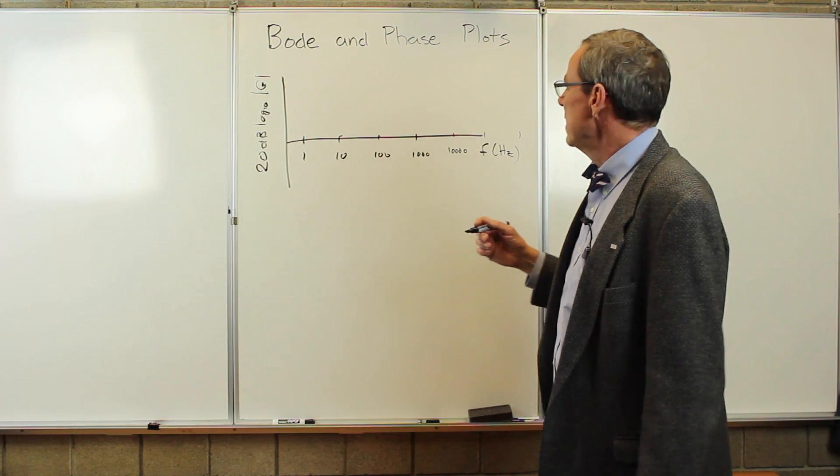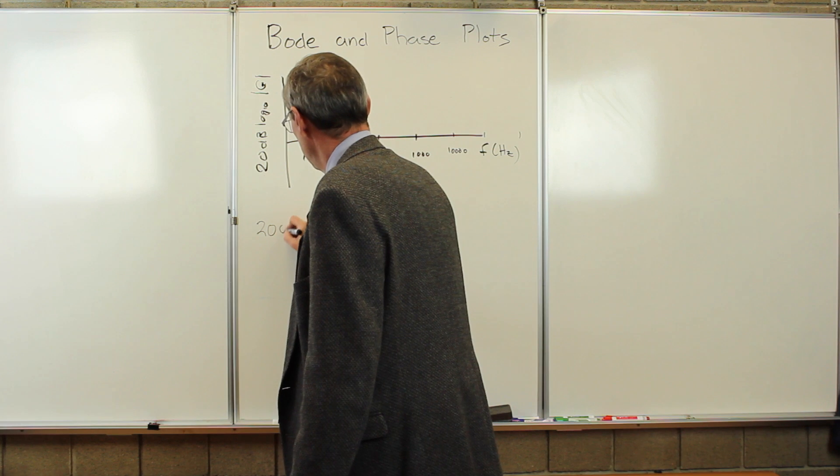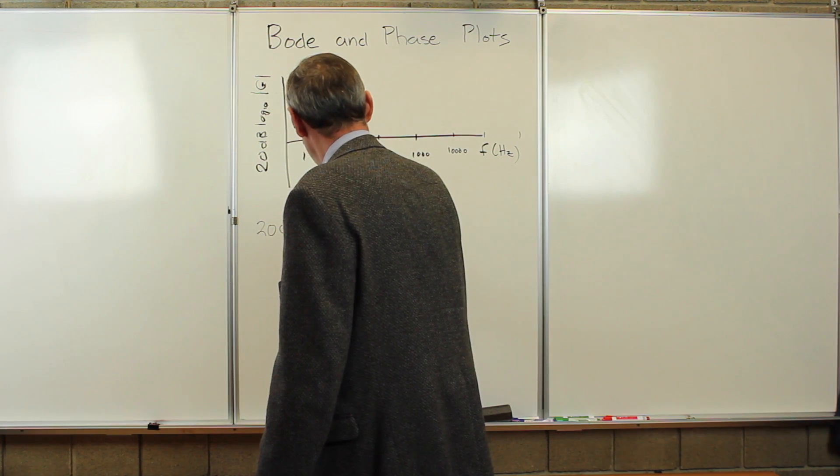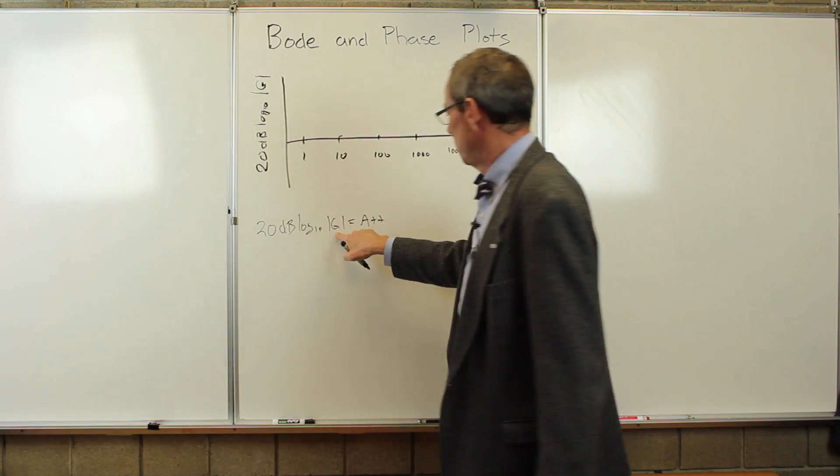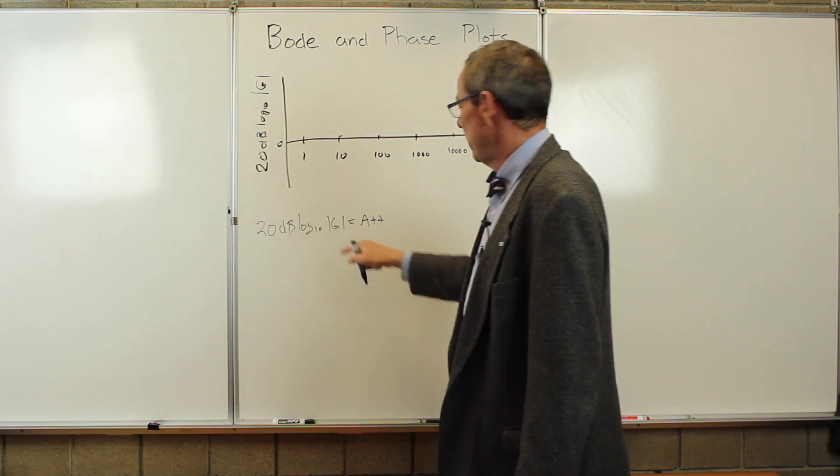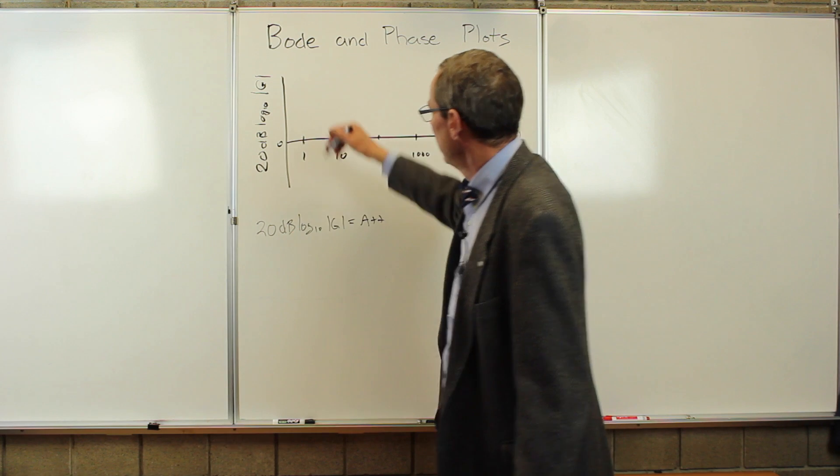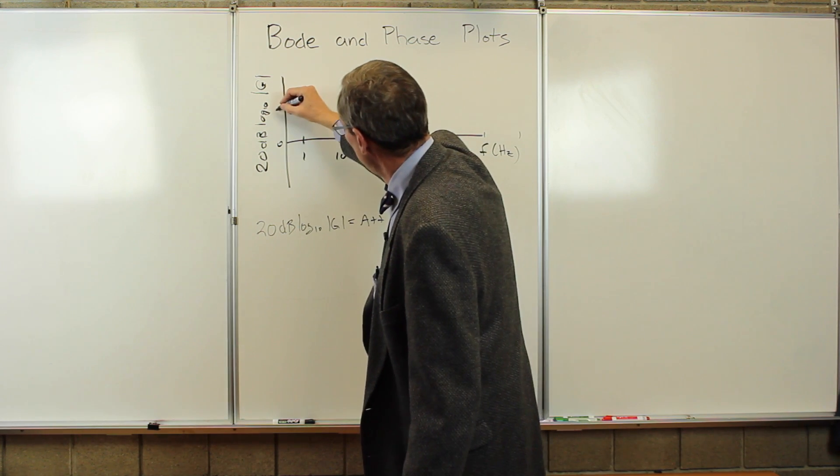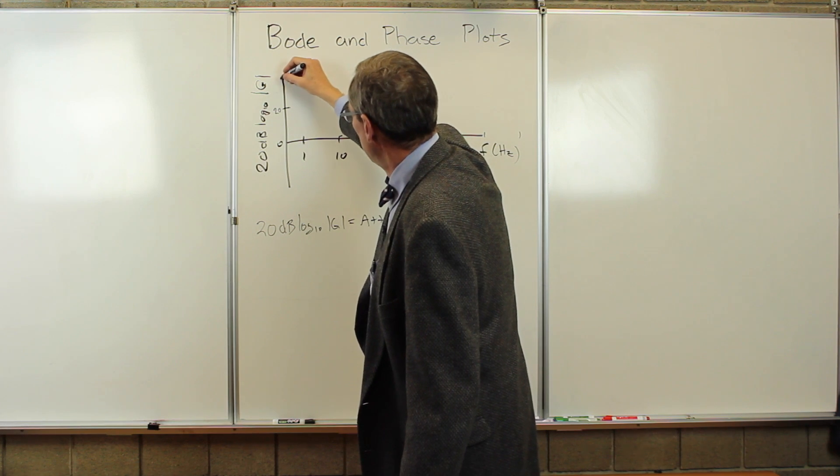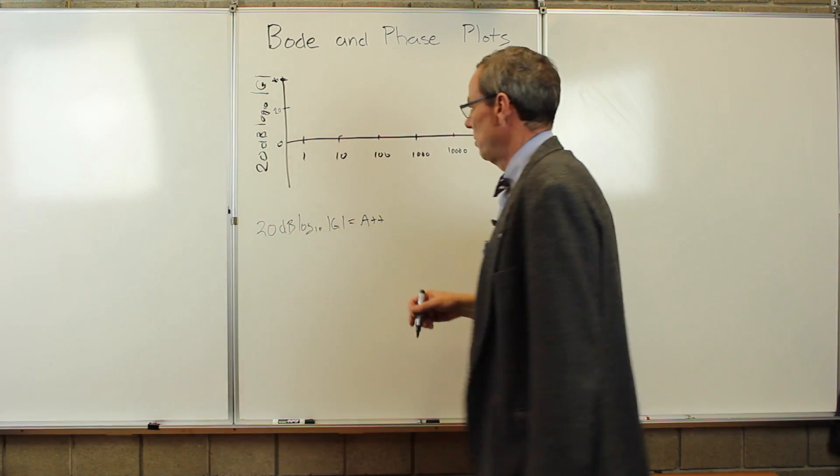If the gain is one, so we know twenty dB log base ten of gain equals attenuation. If the gain is one, the log of one is zero. We get something at zero. If the gain is ten, we're going to get a one here times twenty. So twenty is going to be relevant for the gain of ten. A gain of a hundred is going to be forty and so forth.